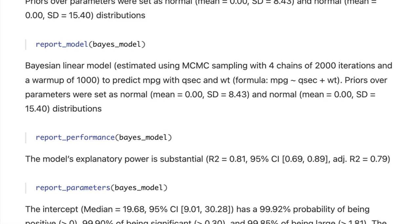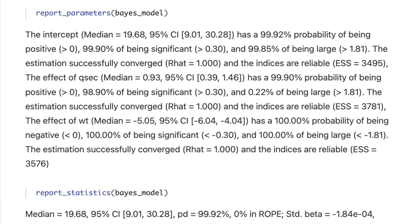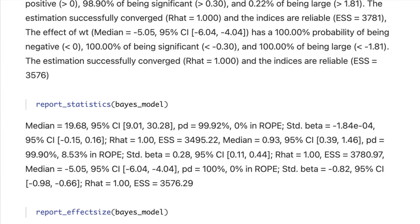Just choose what you want to include into your text with one of the following functions: report priors, report model, report performance, report parameters, report statistics, or report effect size.